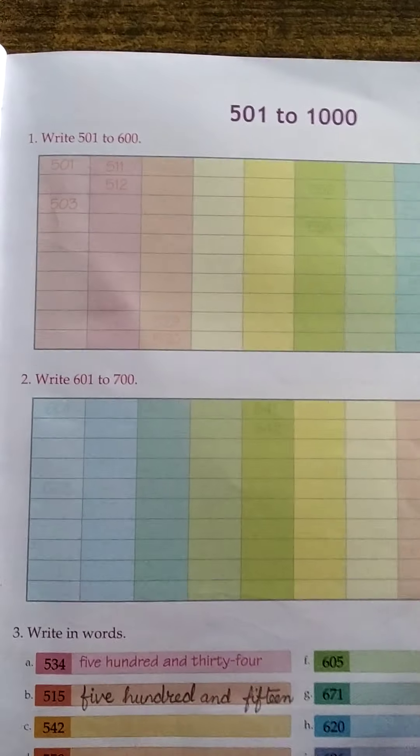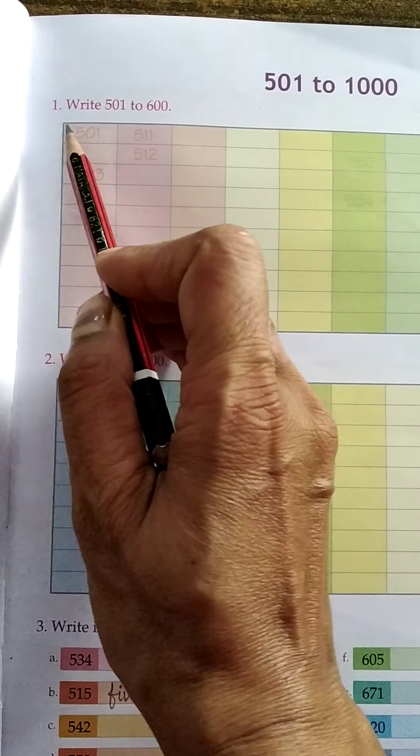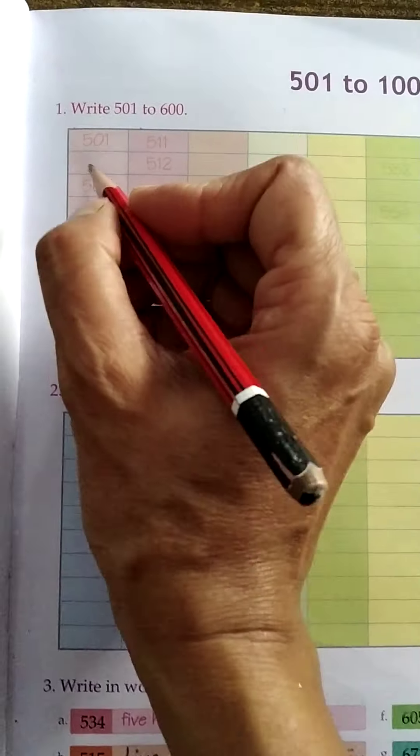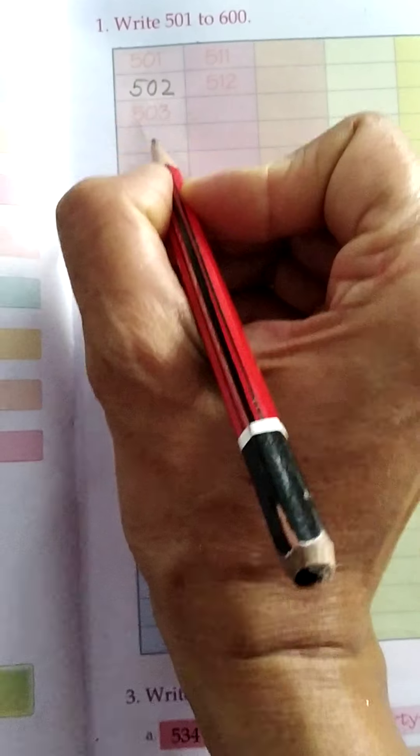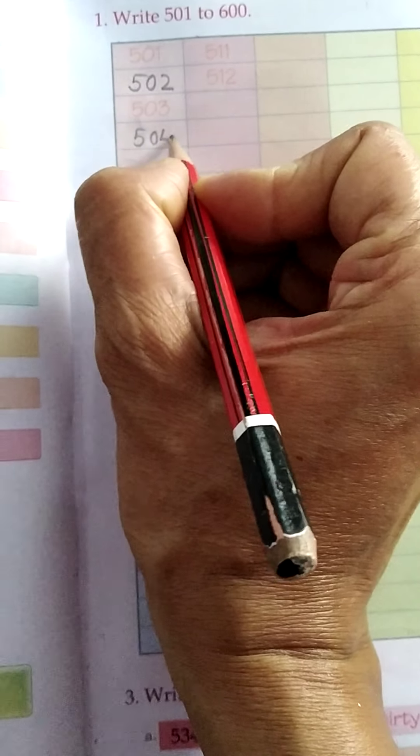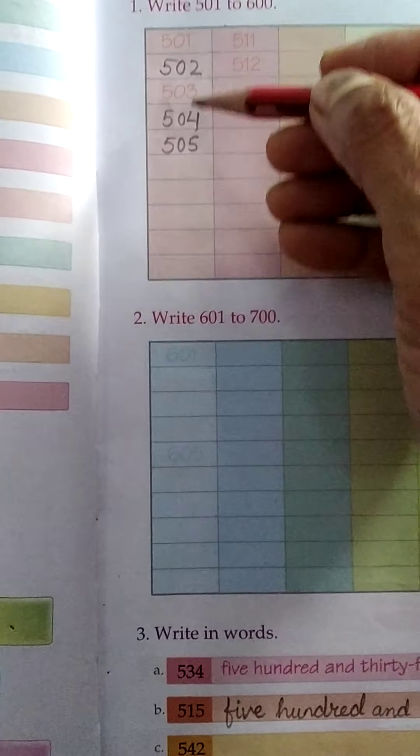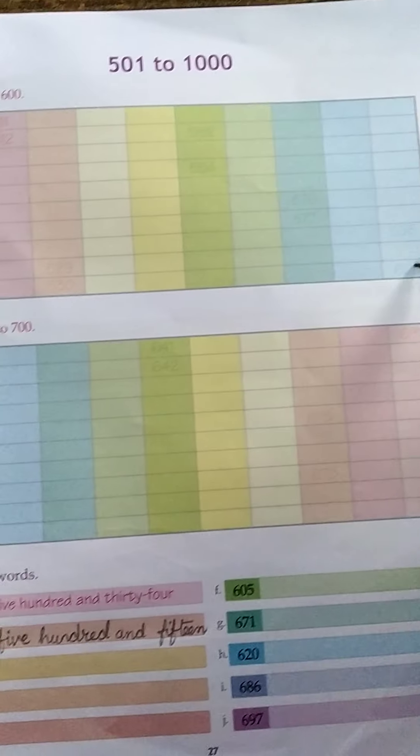Good. Let's do this exercise. You have to write the number from 501 to up to 600. So 501, 502, 503, 504, 505. Like this. You have to complete this table up to 1000.